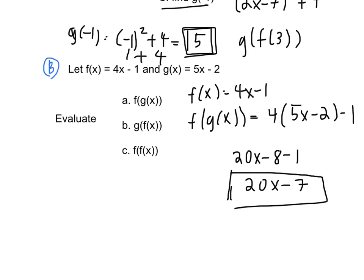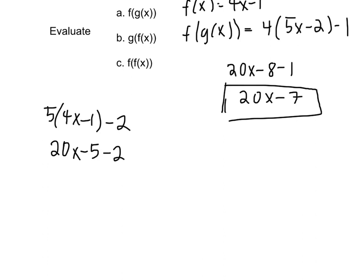Now g of f of x. We're taking our g equation and substituting the f of x equation for wherever there is x. 20x minus 5, minus 2, 20x minus 7. And these actually happen to be the same answer, but this won't always be the case.